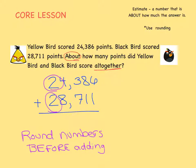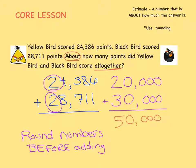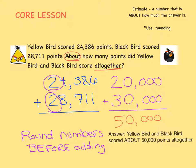24,386 rounds to 20,000. 28,711 rounds to 30,000. This makes it a really easy problem to solve in our heads. 20,000 plus 30,000 equals 50,000. That's right, yellow bird and black bird scored about 50,000 points all together.